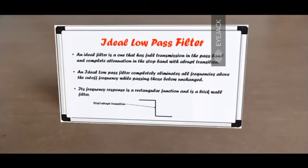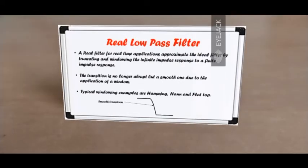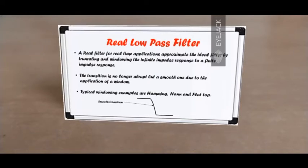Clearly, that doesn't exist in real life, and hence it is an ideal low-pass filter. A real filter approximates the ideal filter by truncating and windowing the infinite impulse response to a finite one. So the transition is no longer abrupt — it's no longer a brick wall kind of filter — but a smooth one due to the application of a window.